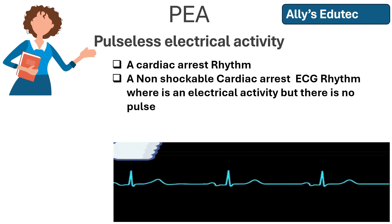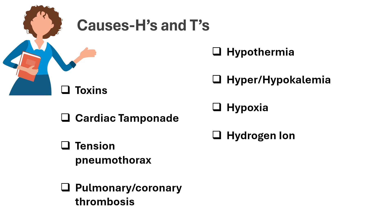So the difference between Asystole and PEA - both are non-shockable rhythms. Now we will see the causes. In the cardiac arrest algorithm, the causes of cardiac arrest are Hs and Ts - there are 5 Hs and 5 Ts. These may include hypothermia, hypo or hyperkalemia, hypoxia, electrolyte imbalance, toxins, tension pneumothorax, and pulmonary or coronary thrombosis. These are the causes.